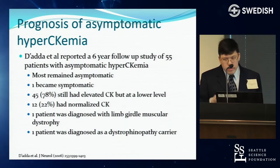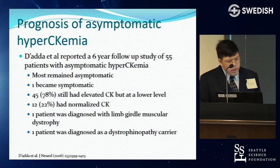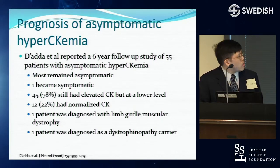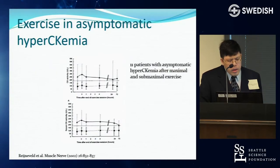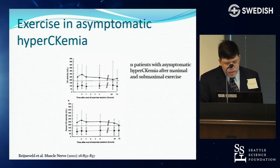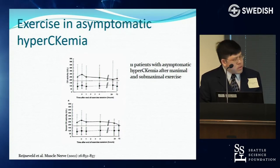In terms of prognosis, a study of 55 patients over six years found that most remained asymptomatic — only one became symptomatic. Many still had elevated CK, suggesting that was probably their normal. Some normalized, perhaps because their elevation was due to exercise or another cause. Only a couple were diagnosed with a specific neuromuscular issue. Additionally, patients with a baseline elevated CK do not show increased susceptibility to further CK elevation with maximal or sub-maximal exercise.